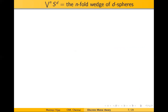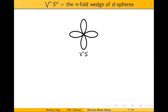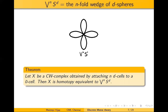Some CW complexes are determined only by the number of D-cells they have and not necessarily by the maps. One such example is the wedge of N D-spheres, which is all the spheres connected at a single point. For example, here is the wedge of four S1 — they are all connected at a single point. The main theorem is that any CW complex obtained by attaching N D-cells to one zero cell is necessarily homotopy equivalent to the wedge of N S^d's.